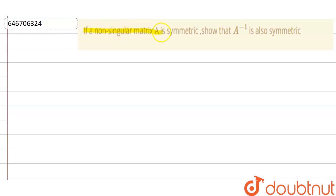If a non-singular matrix A is symmetric, show that A inverse is also symmetric. Now it is given that A is a matrix which is non-singular and A is also symmetric. Then we need to show that A inverse is also symmetric.